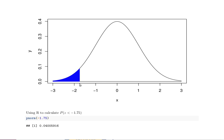There's the negative 1.75 on the Z axis and the pnorm of negative 1.75 finds that blue area.